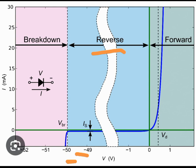This pink region is called breakdown of your diode. We generally don't operate in this region because it damages the diode.